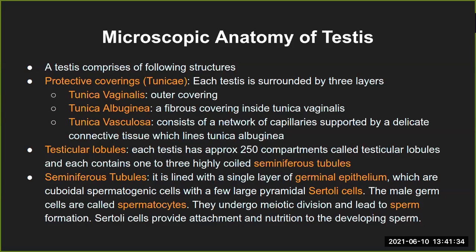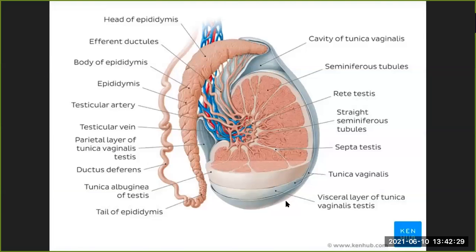Tunica vaginalis is the outermost layer. Tunica albuginea is the middle one; it is fibrous in nature so it can hold the complete inner contents of the testis. Tunica vasculosa — the name itself refers to vasculature, that is capillaries — is supported by a thin, delicate connective tissue lining the tunica albuginea. We can differentiate vasculosa from albuginea because we can see the capillaries.